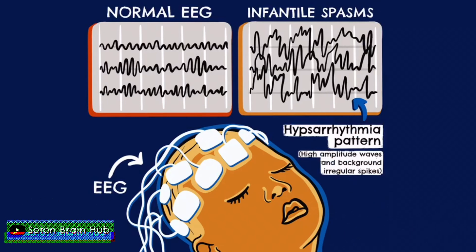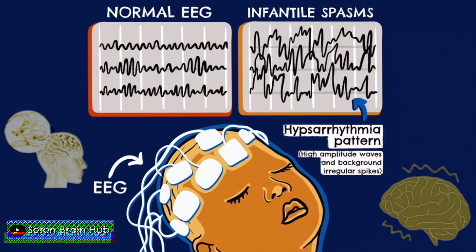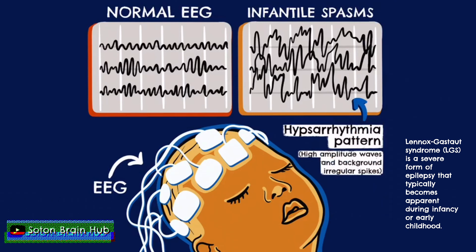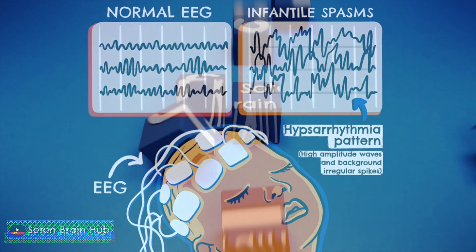Children affected by infantile spasms quite often have delayed development. Approximately 60% of infants who suffer from infantile spasms will go on to have epilepsy in childhood. Some severe epilepsy syndromes, such as Lennox-Gastaut, can evolve from infantile spasms. As previously mentioned, the underlying pathology is an important factor to consider in the prognosis of the condition, as it will vary based on the etiology of the disease.